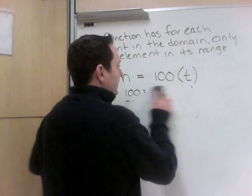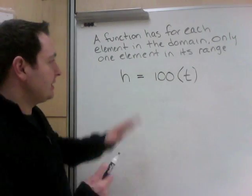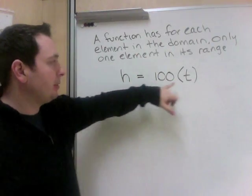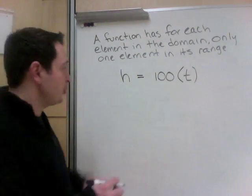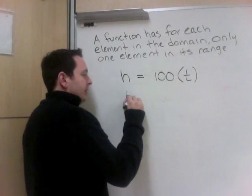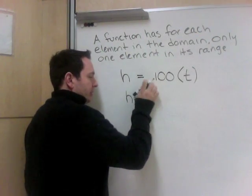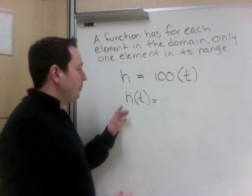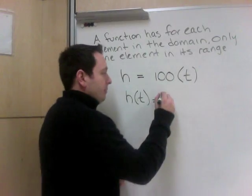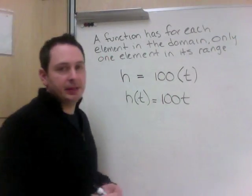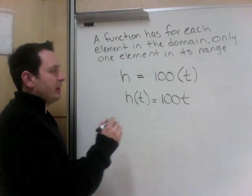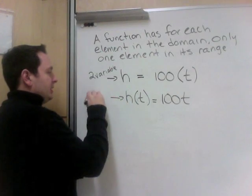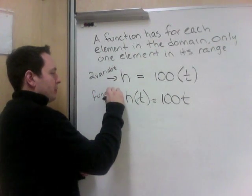If this is my equation, this is a two-variable equation. Variables are just fancy word for letters. Height's a variable, time's a variable. In function notation, we would write this as h of t, and we say of t when there's brackets, but really what it means is the height with respect to time is 100t. That's how this would be written in function notation. This is two-variable. This is function notation.